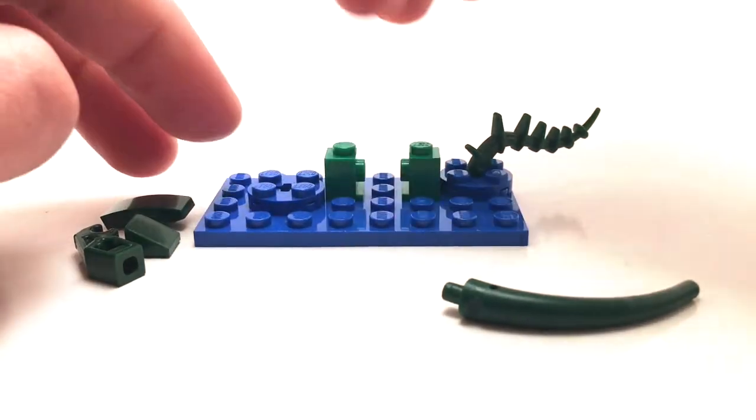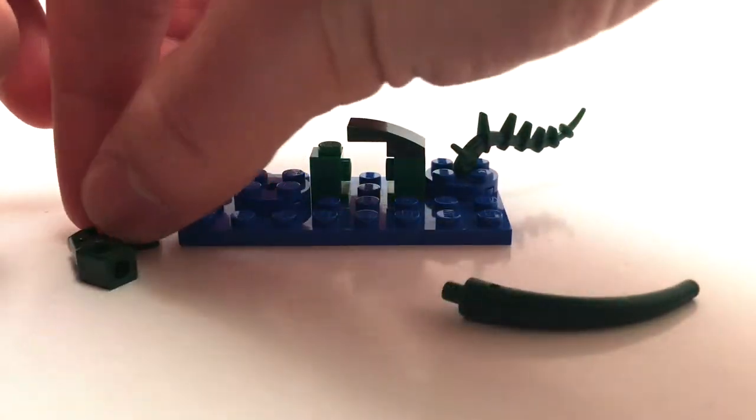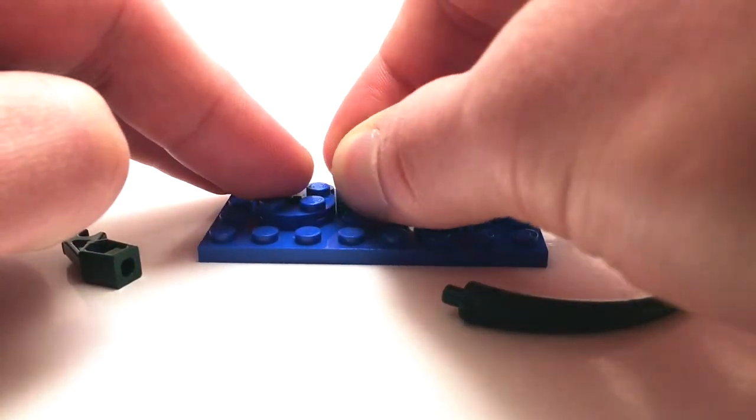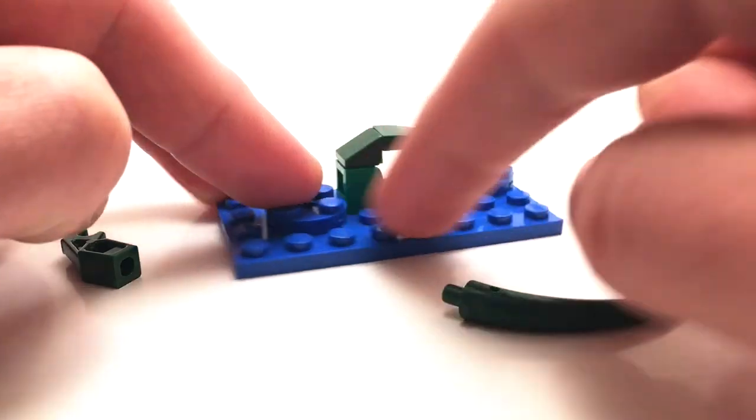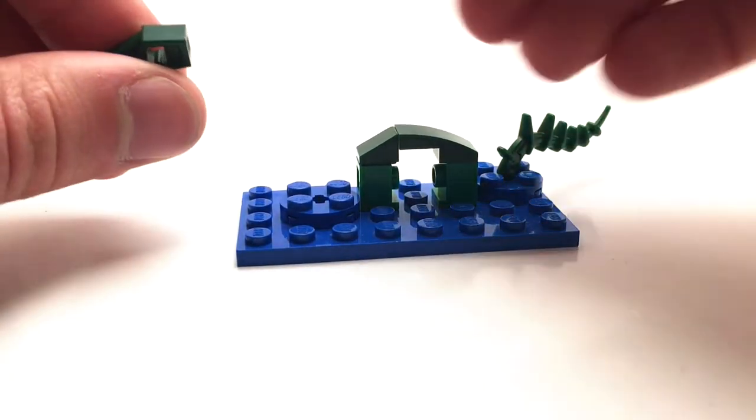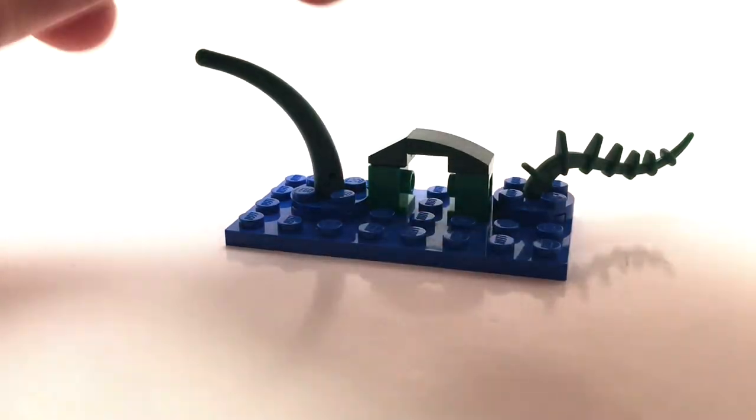The middle of the sea monster is just these two green headlight bricks with a couple dark green slopes over them, and that helps to create a more rounded look. Then the neck is this dark green tail piece.